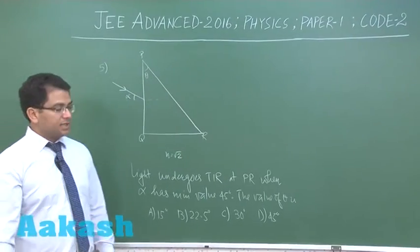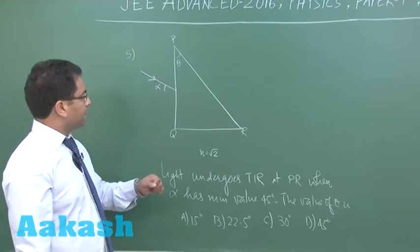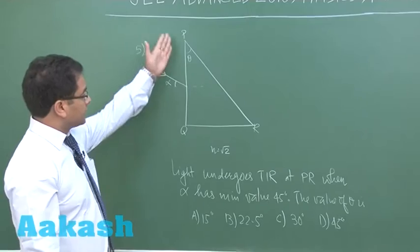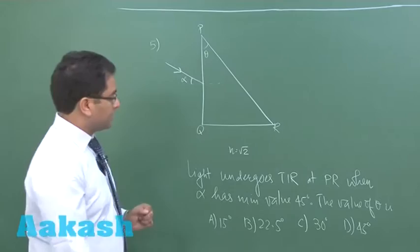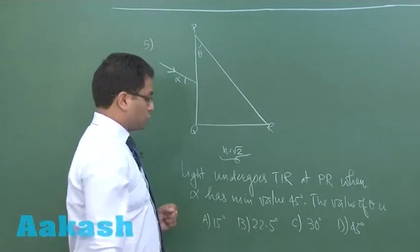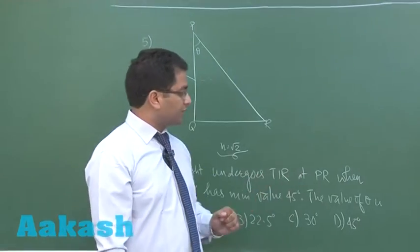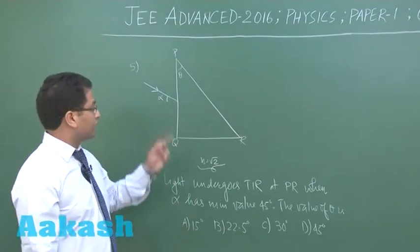Question number five is from ray optics and it has been set from prism. The concept of total internal reflection is also involved. There is a prism with this angle as theta and this angle of incidence is alpha. The refractive index has been given as root 2, and it says light undergoes total internal reflection at PR when alpha has minimum value of 45 degrees.